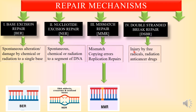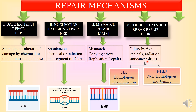The next type is the double-stranded break repair mechanism, or DSBR. This injury is caused by free radicals, radiations, or anti-cancer drugs. DSBR is of two kinds: homologous recombination repair and non-homologous end joining repair mechanisms. By these two mechanisms, the double-stranded break repairs are carried out.